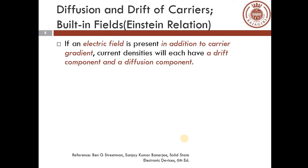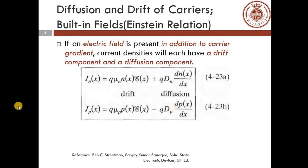Now let us understand Einstein's relation. Einstein's relation relates the diffusion coefficient to the mobility of charge carriers, and it is very important in semiconductor device design and analysis. In addition to carrier concentration gradient, if an electric field is also present, the current density will have a drift component in addition to the diffusion component. The total current density including both drift and diffusion is: Jₙ(x) = q·μₙ·n(x)·ε(x) + q·Dₙ·dn(x)/dx.